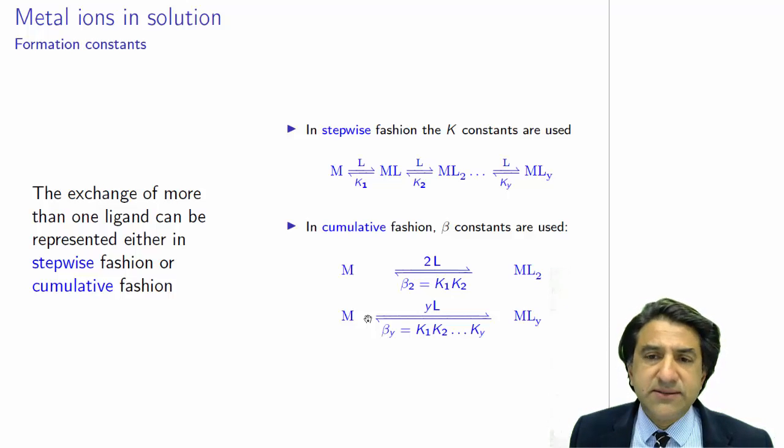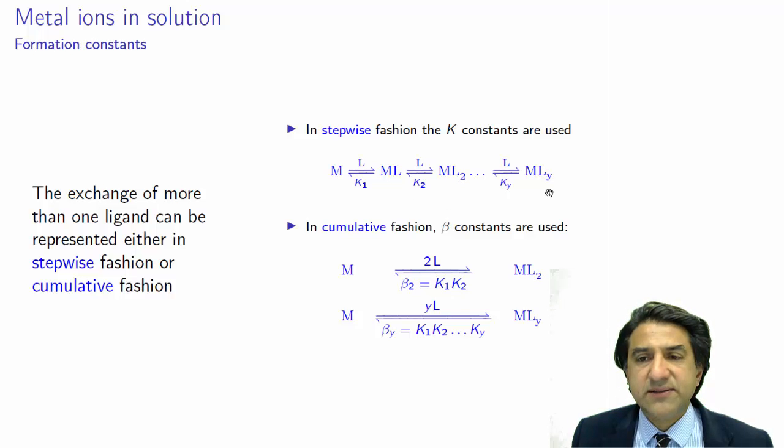Now, we can have formation constants which are more than one. So the metal can join with the ligand to form the first one. It can form the second one with the second one to form ML2. And then ML2 can form ML3. Each of these are the stepwise equilibrium constants. That's K1, M to ML, K2, ML to ML2, and so on.